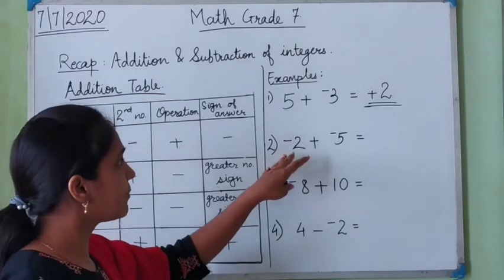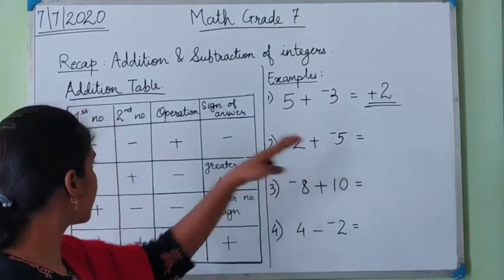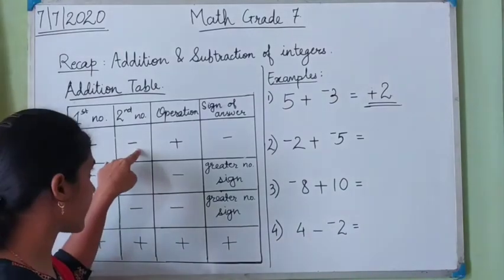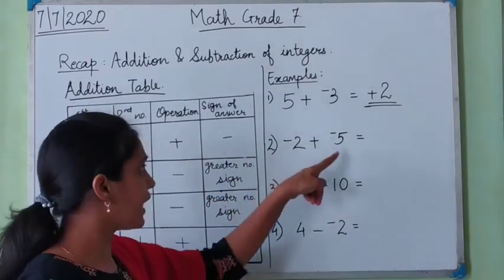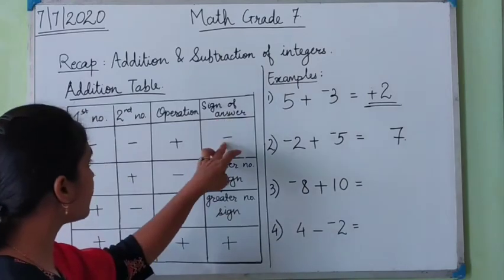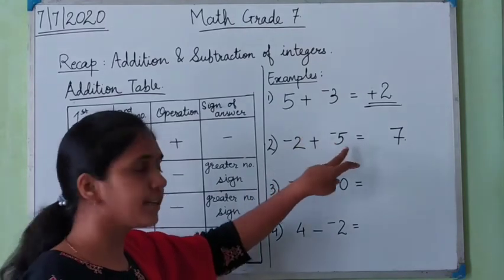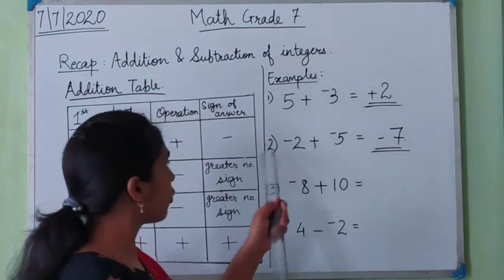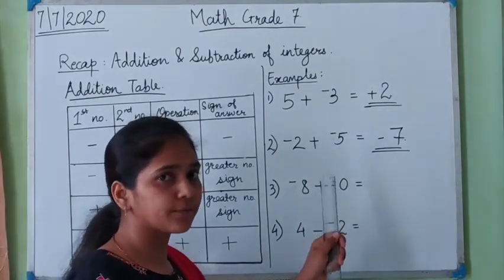In the next example, the first number is negative 2 and the second number also has a negative sign. Both numbers are negative, so the operation is addition. 5 plus 2 gives us 7. The sign of the answer will be negative because both numbers are negative. Even if we check the greater number, it will also have a negative sign only. So the answer will always be negative if both integers have negative signs. The answer is negative 7.